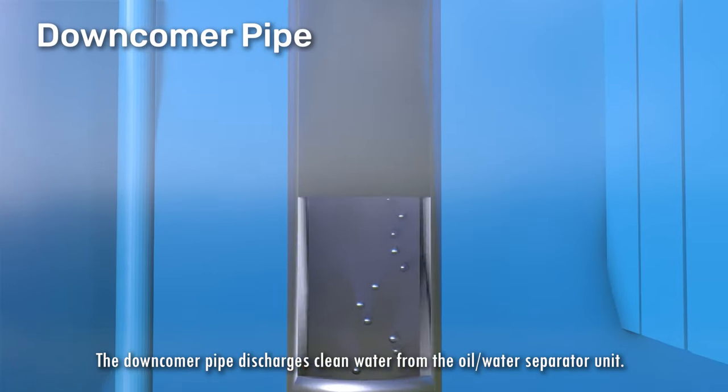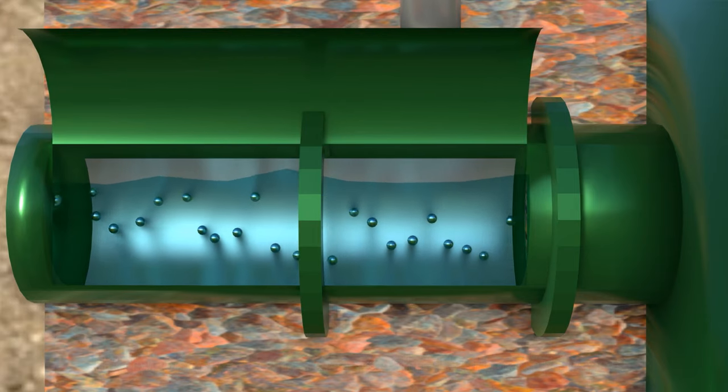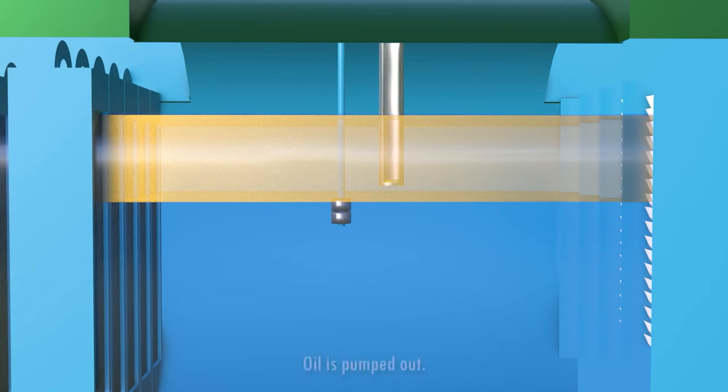Flow is moving through the downcomer pipe on the outlet. That is set at 20% off the bottom of the vessel, so clean water is flowing out while we're trapping oil on top of the water and solids at the bottom on the front end.